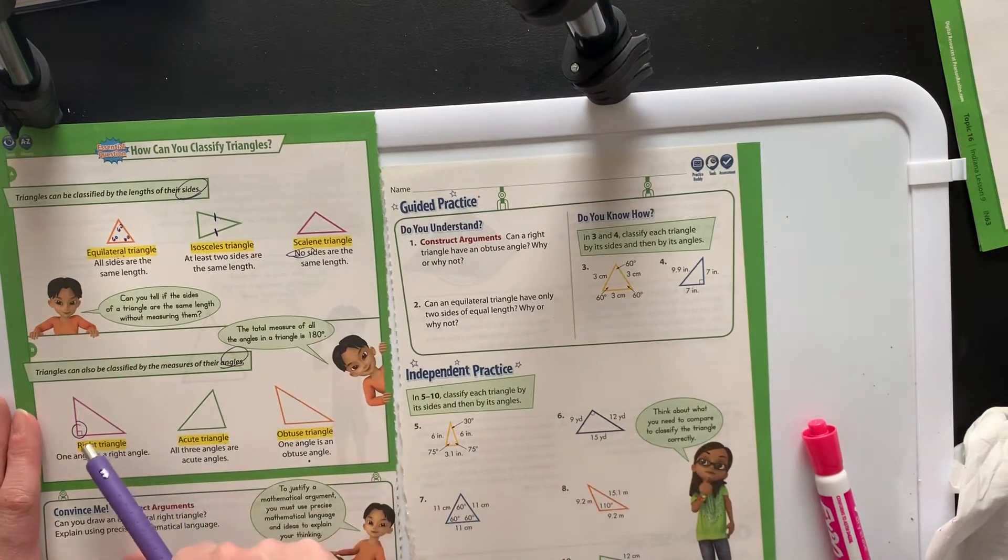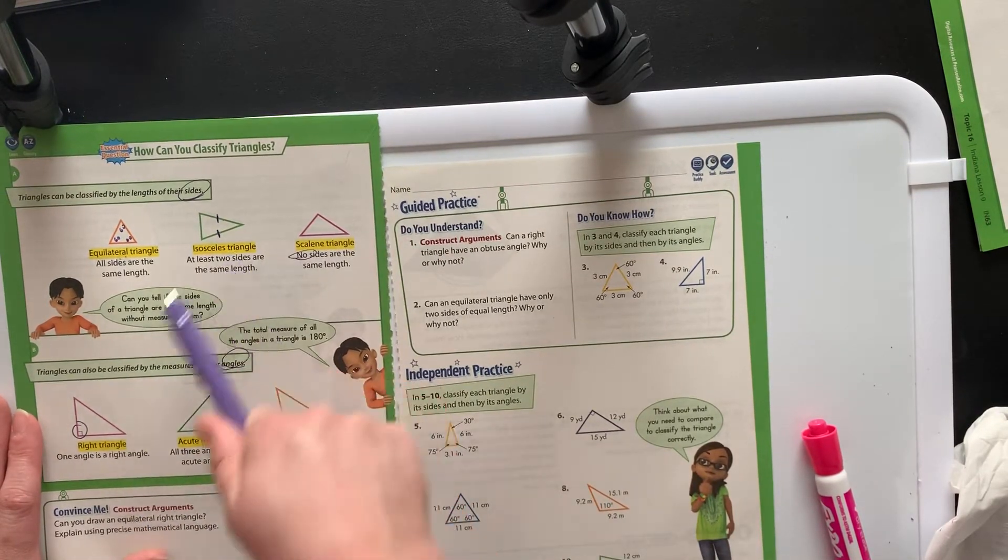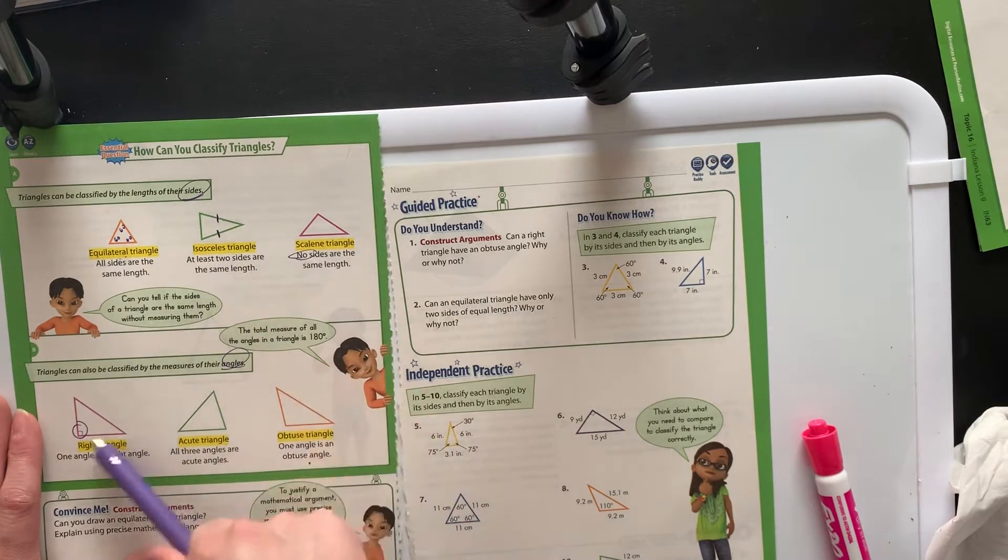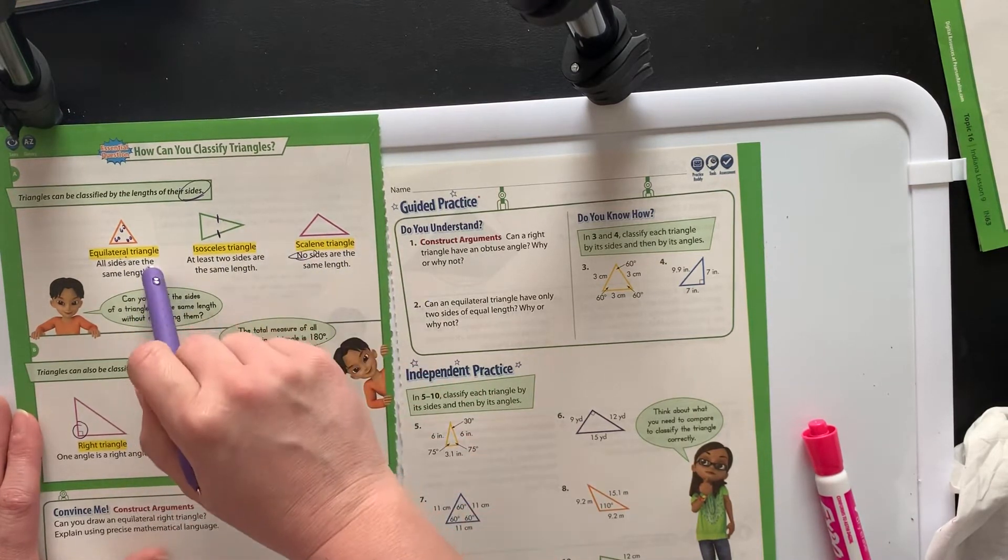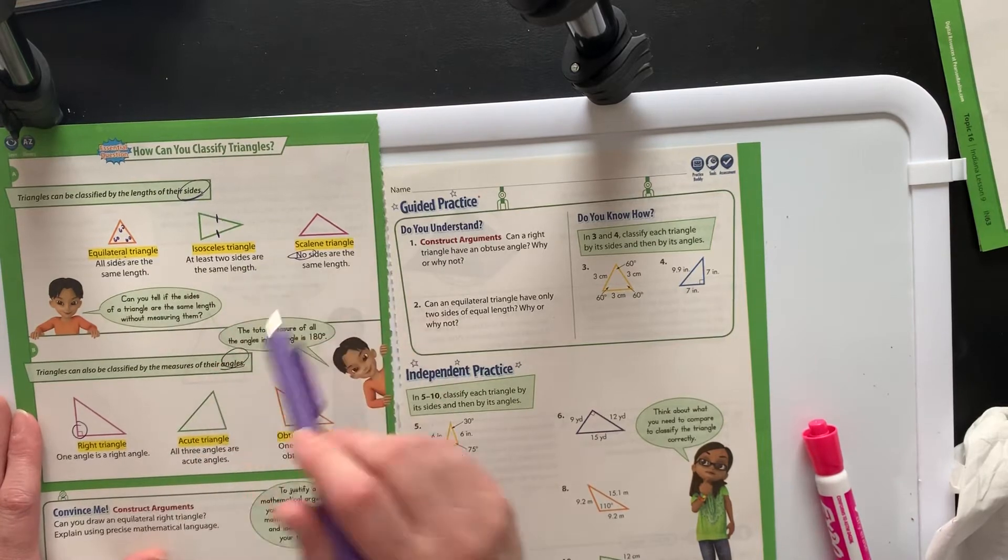And then they can also be two of these, so it could be like a right scalene triangle, right isosceles triangle, or an acute equilateral triangle. You can use both to describe each one.